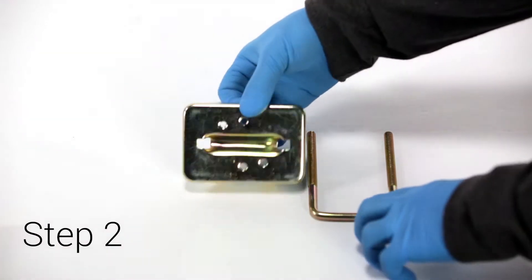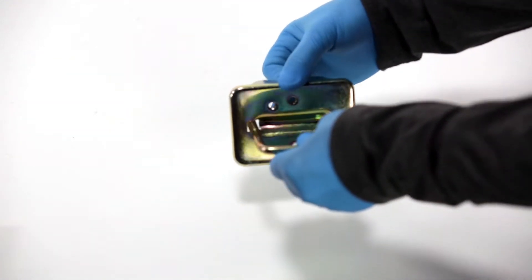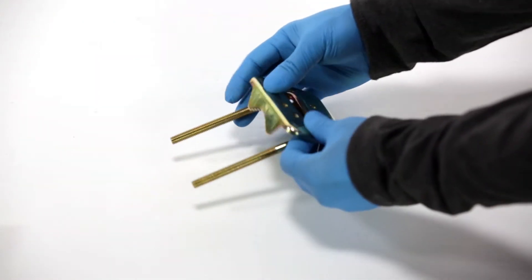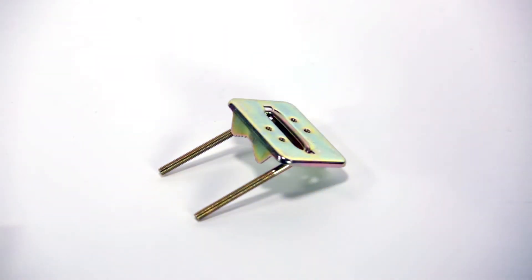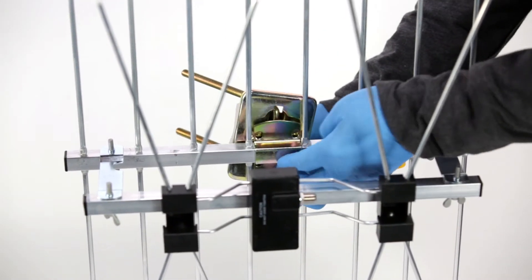Step two. Make sure the U-bolt is placed between the two bracket clamps before attaching using the two screws. Attach mounting hardware to the middle of the antenna grid as shown.